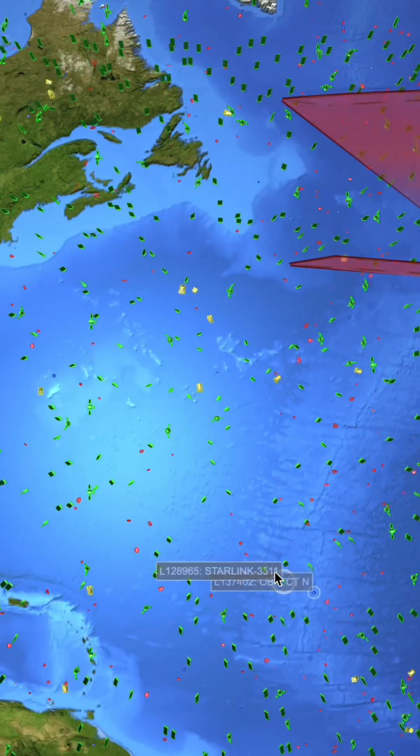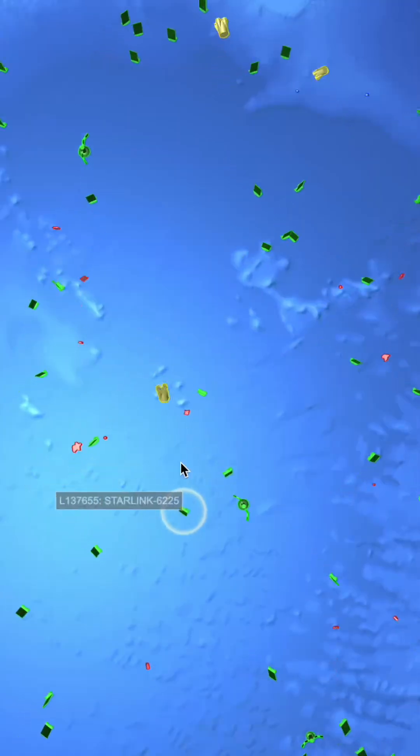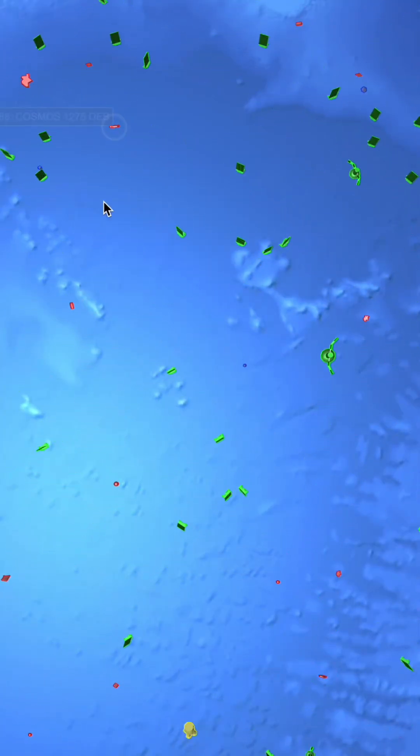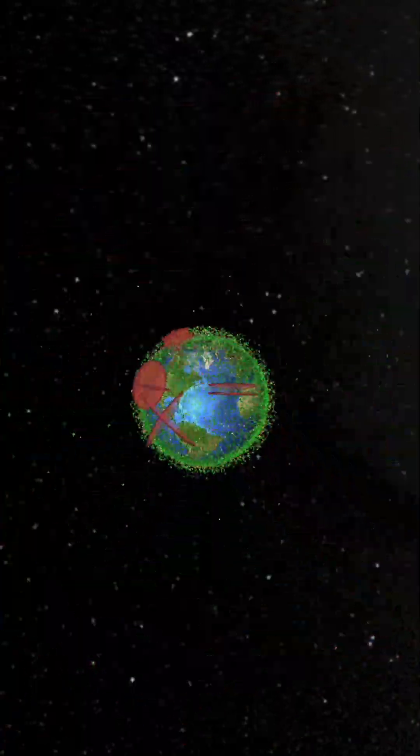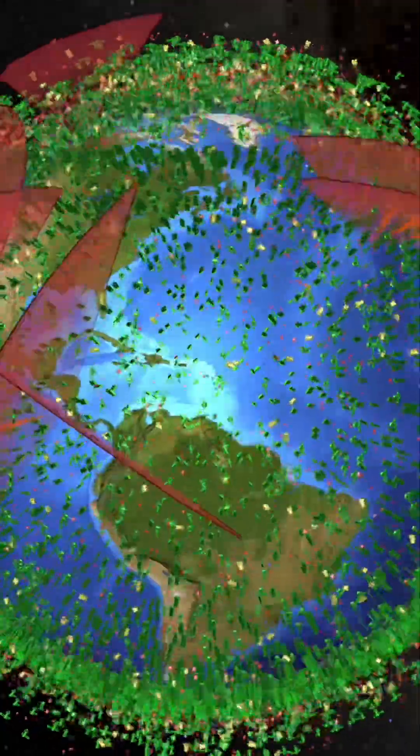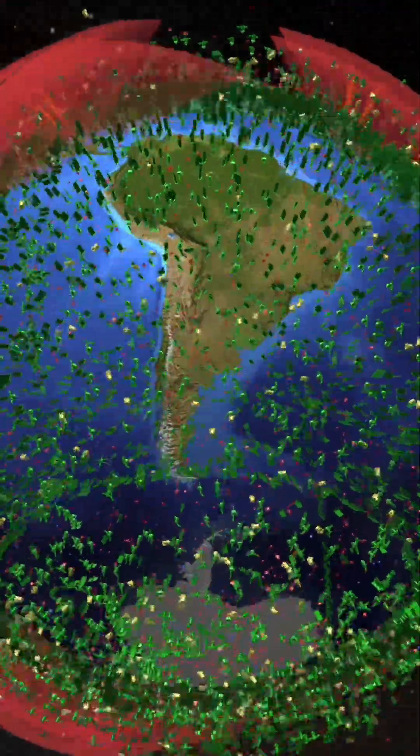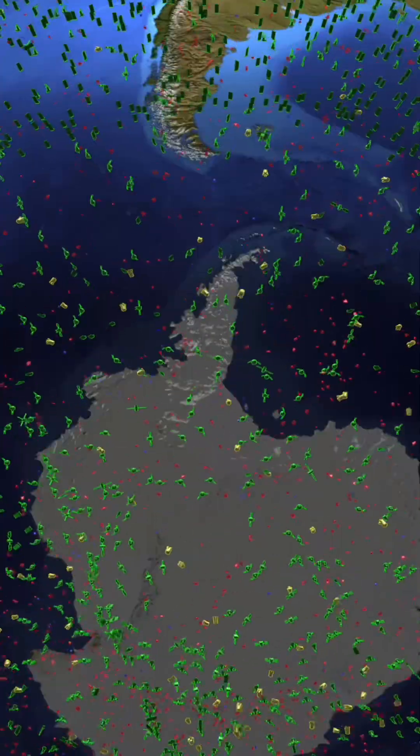Right now, over 23,000 tracked objects are hurtling around our planet at 17,000 miles per hour. Satellites that power our world, spent rocket stages, and a cloud of dangerous debris, all capable of catastrophic collisions.